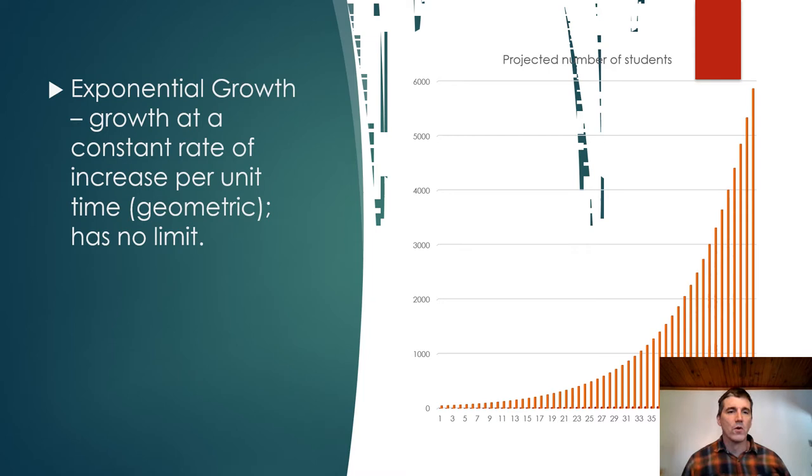So when a population grows at a constant rate over a long period of time, this is what we call exponential growth or it has a geometric type of growth. This theoretically makes sense. In practice, it rarely happens. So an example is if we took our example of students and we had a 10% growth rate in a student population each year. If that continued for 50 years at the same rate, we can end up with like 5,000 students in class in 50 years.